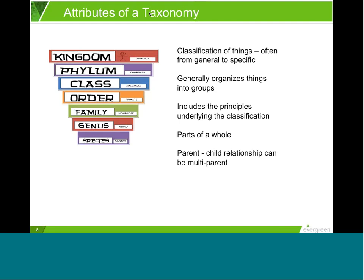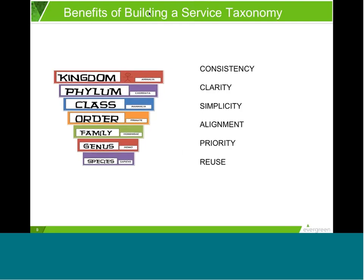It is possible for a child object in a taxonomy to have multiple parents — just like in ITIL, a CI can be a component or involved in many different services. For example, you could have a category like HR with a group 'training' and a subgroup 'IT training,' while IT training could also be a subgroup under the category IT customer services.